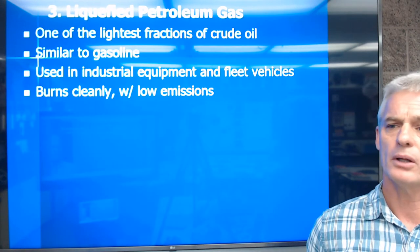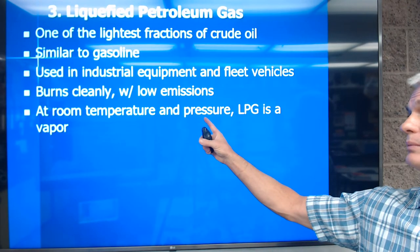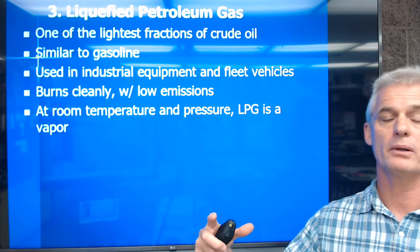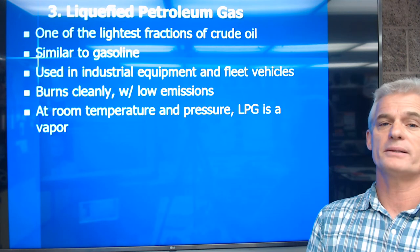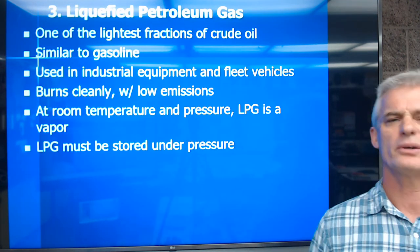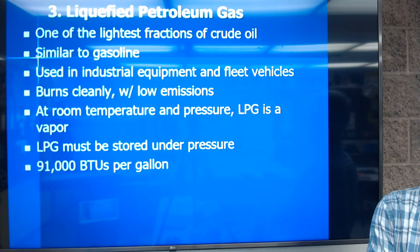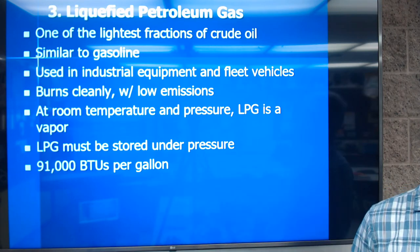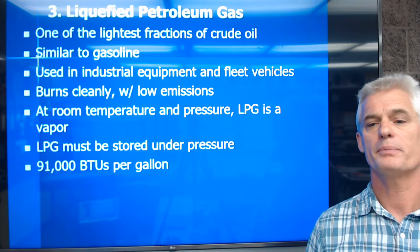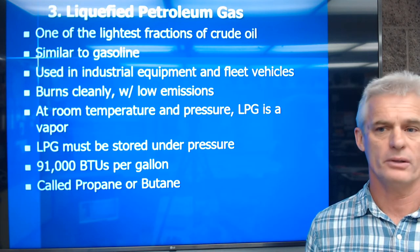LPG burns clean with low emissions. It is a vapor at room temperature and pressure, which makes it tough to store in quantity — we have to compress it to high pressure to get it into a liquefied state. It's got to be stored under pressure, which is a little scary and makes it harder to fill. It has about 91,000 BTUs per gallon — significantly less energy than gasoline. We call it propane or butane; you can cook with it and power vehicles.